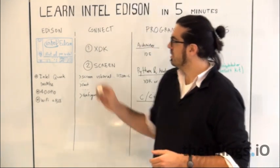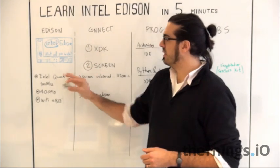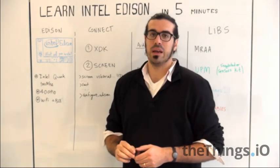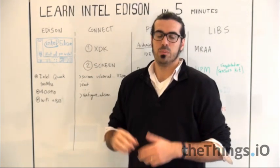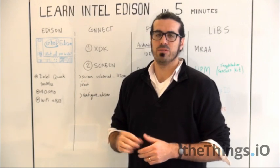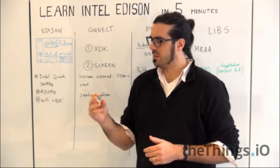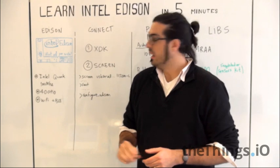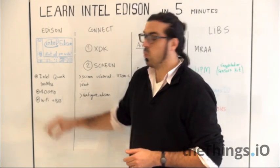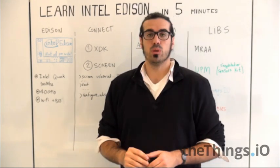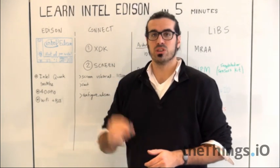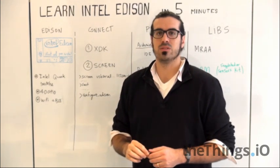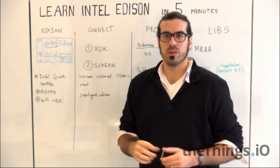The Edison features an Intel Quark at 100 MHz, plus 1 GB RAM, 4 GB hard disk, 40 GPIO, and Wi-Fi and Bluetooth Low Energy. It's a very powerful and small device to program whatever you like.